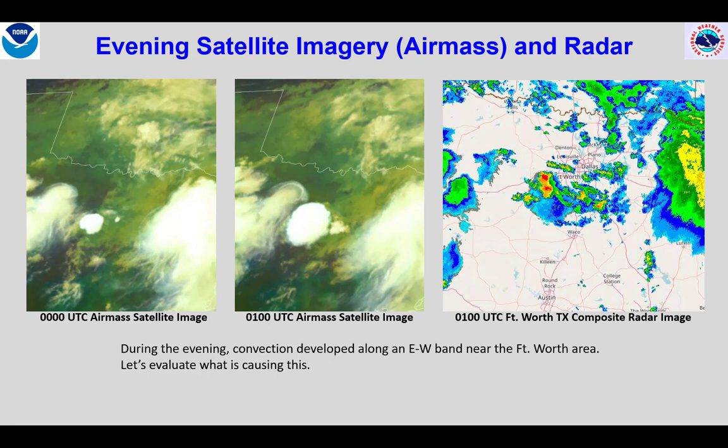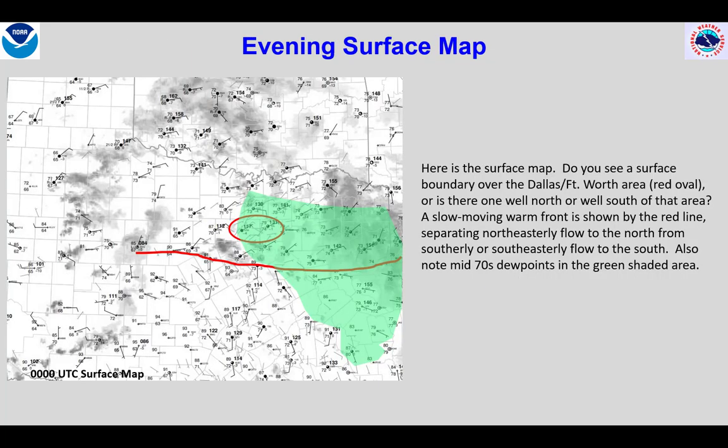Let's try to understand what is causing the convection in order to predict what will happen in the near term. The surface map shows some real trouble. Recall I said that we need to watch out for any east-to-west oriented boundaries that convection could train along. Here we see such a boundary, a very slow-moving warm front just south of the convection seen on the prior slide. You'll also note pooling of higher dew points in the mid-70s along with 80-degree temperatures around the Dallas-Fort Worth area.